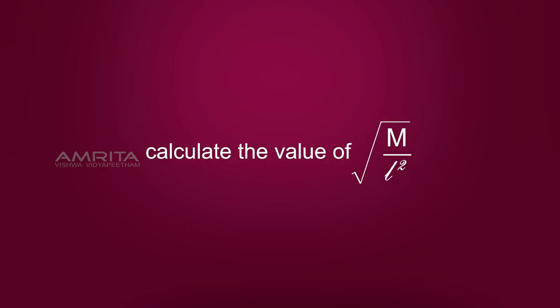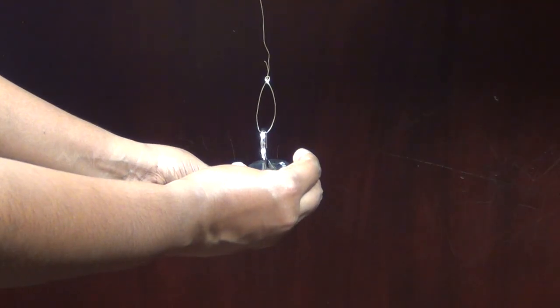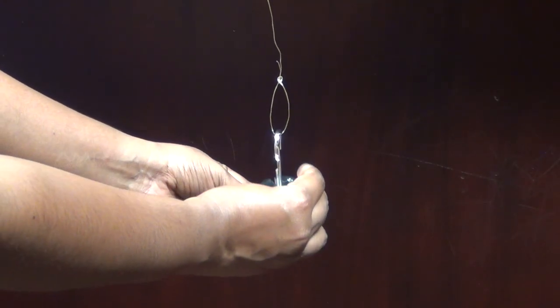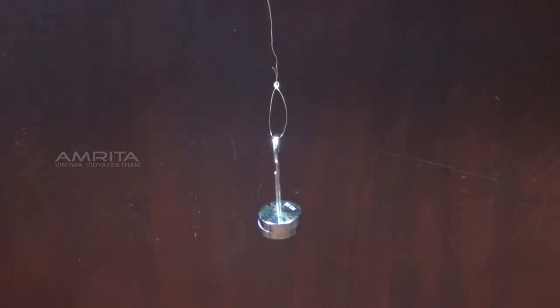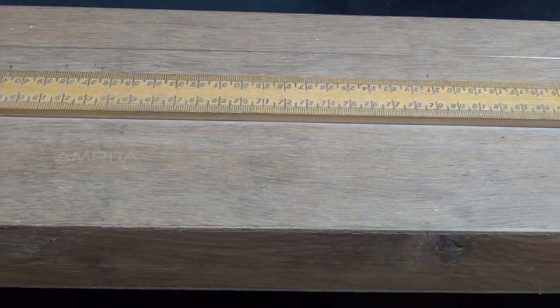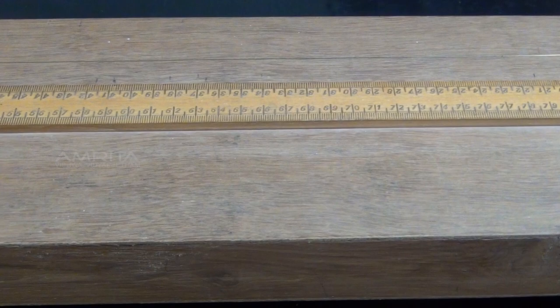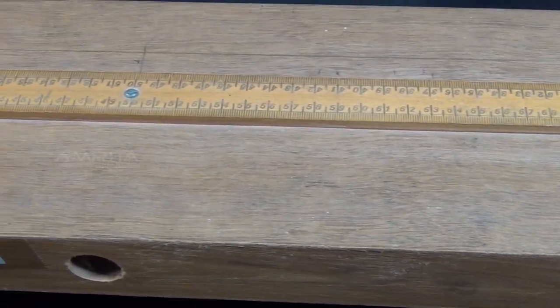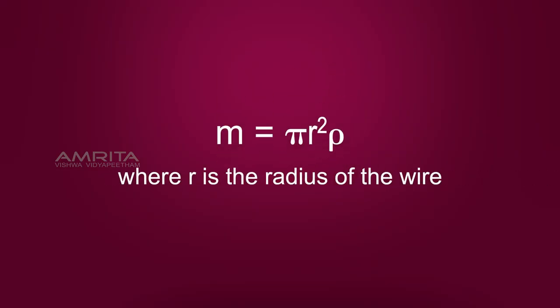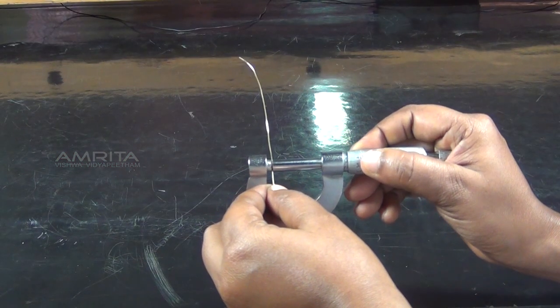This is called the resonating length L. Then calculate the value of M by L square. Repeat the experiment for different loads and the average value of M by L square is found out. The linear density of the wire M can be calculated using the relation M is equal to πr²ρ where r is the radius of the wire which can be measured using the screw gauge.